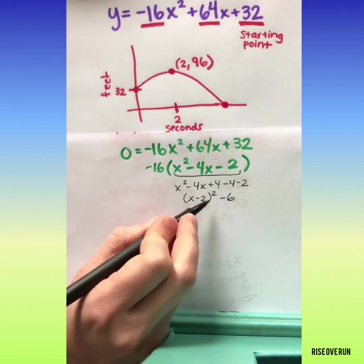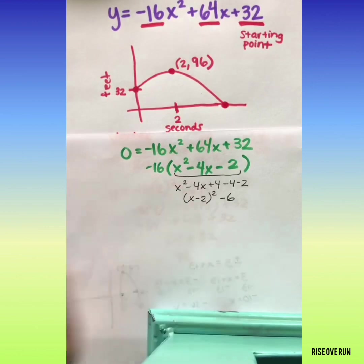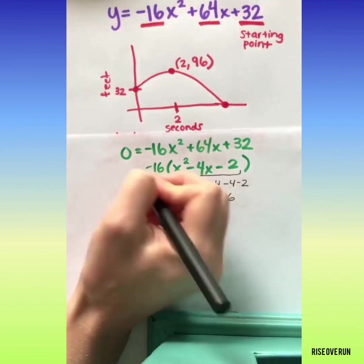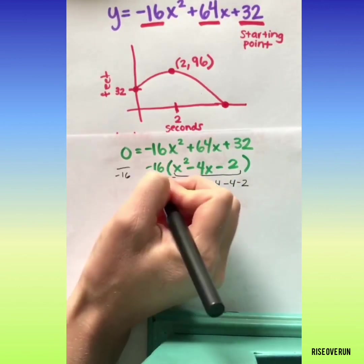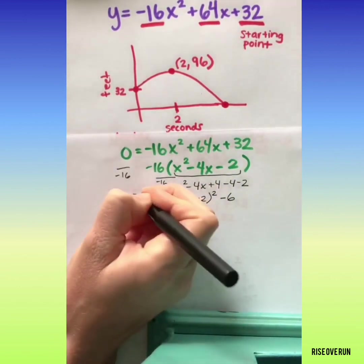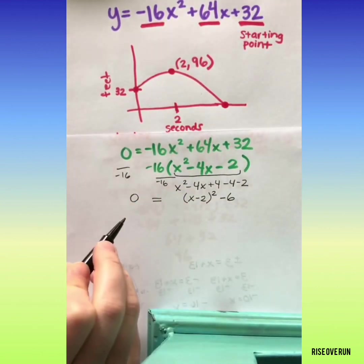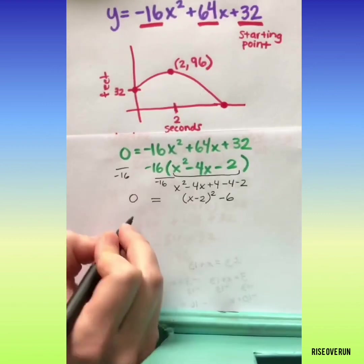Okay, now I can solve this. Let's back up a second, because what happened to this negative 16? What I could do is divide it from both sides. Now I have 0 equals x minus 2 squared minus 6. Then I can add 6.